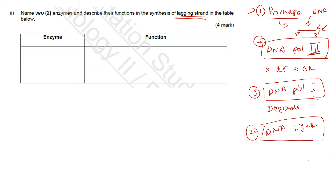Finally, DNA ligase joins the Okazaki fragments together to produce a continuous lagging strand. These are the four enzymes required during synthesis of the lagging strand: primase, DNA polymerase III, DNA polymerase I, and DNA ligase. The question only asks for two, so pick any two and describe their functions.